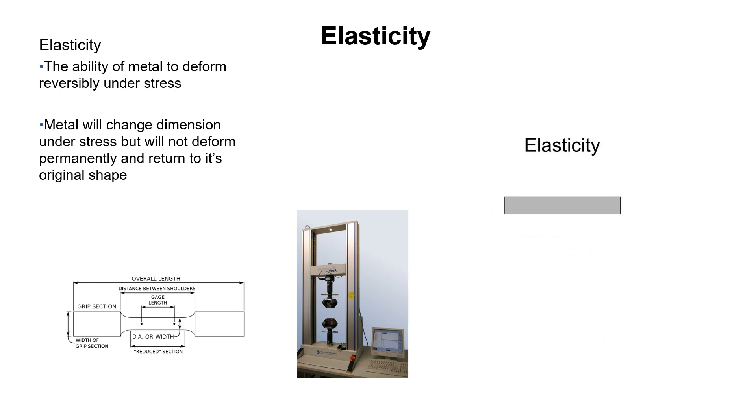The ability of a metal to deform reversibly under stress is known as elasticity. It means that you stretch it and it comes back. Some materials have higher coefficients of elasticity than others. Metals will change dimension under stress but will not deform permanently and will return to their original shape. Kind of like a pair of socks or underwear. If it's worn by too big of a person, that underwear is not going back to its original size. Metals have the same issue - if stretched too far, it's not going back to its original size.